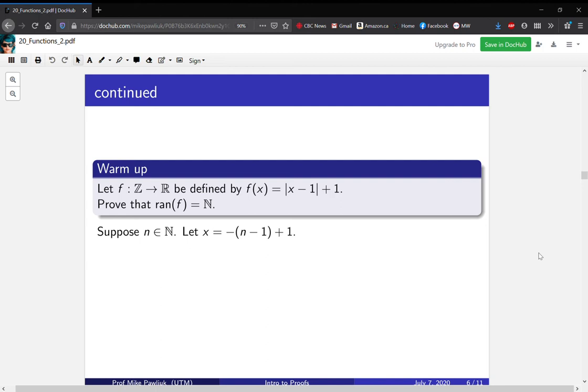Let's check that this is actually an integer. Well, yes, that's not too hard to see that it's actually an integer. But what happens when you plug it into f? What do you get? Well, f(x) is the absolute value of -(n - 1) + 1 - 1 + 1.